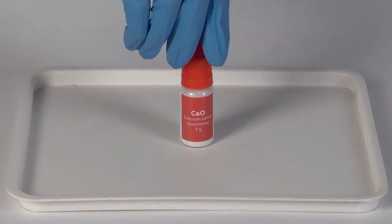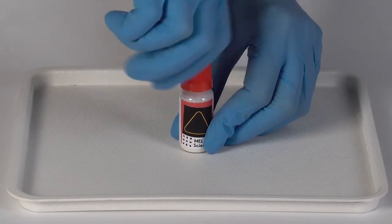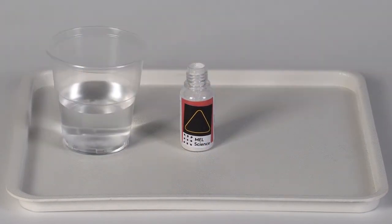Attach a yellow triangle thermosticker onto the bottle of calcium oxide. Open the bottle and put it on the plastic tray.